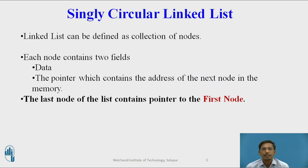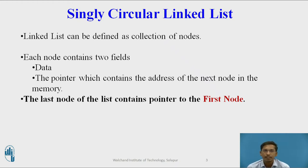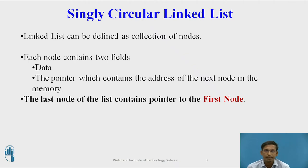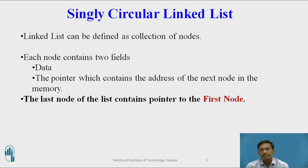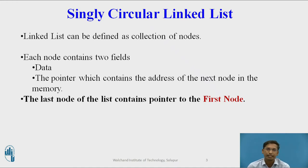We will revise in a minute what a singly circular linked list is. A linked list is defined as a collection of nodes where each node contains two fields: a data part and a pointer, which holds the address of the next node. In a singly linked list, the last node's next pointer stores null, indicating the end of the list.